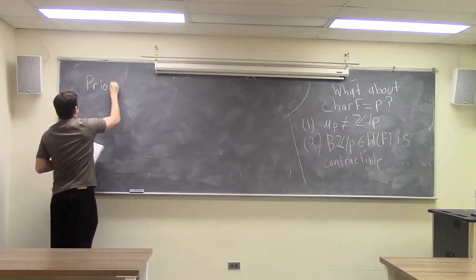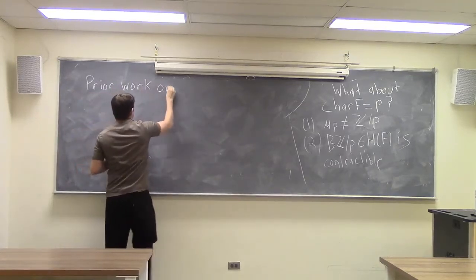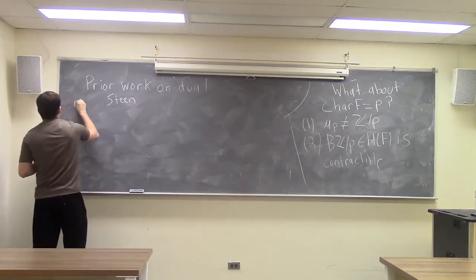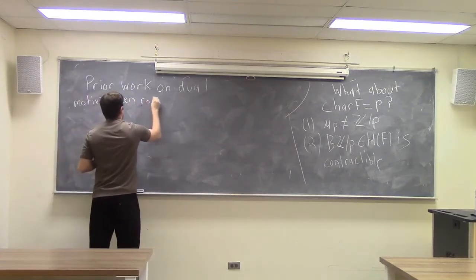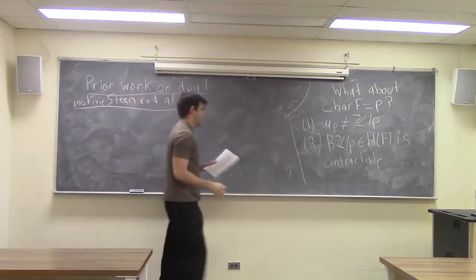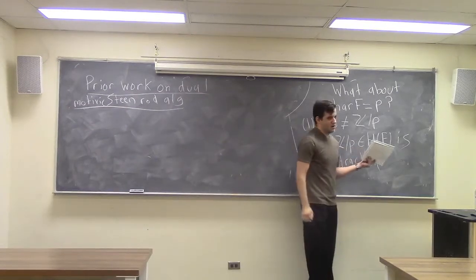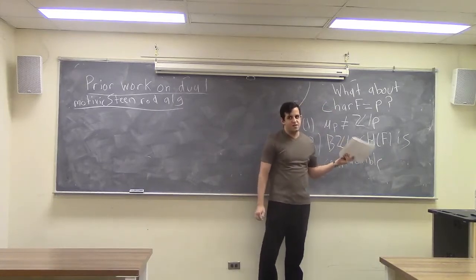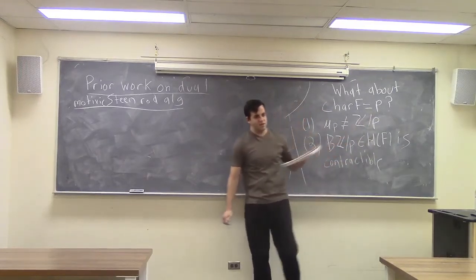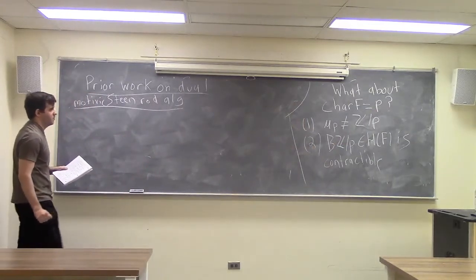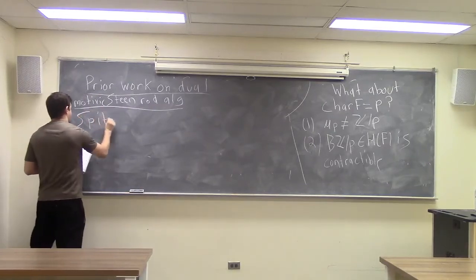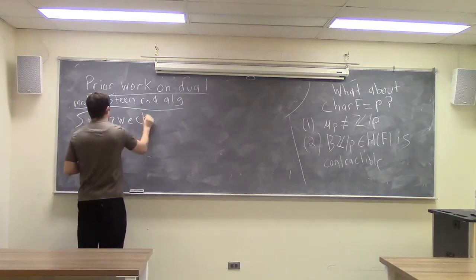Basically this construction from Brosnan, or more generally Voevodsky's construction, doesn't work when the characteristic of your field is the same as your coefficient field. Now when the characteristics aren't equal we had Steenrod operations, but there haven't been any Steenrod operations in the equal characteristic case. So I want to discuss how you can get operations in this case. The way we're going to do it is to take operations that exist in characteristic zero and lift them to characteristic p — the finite characteristic case. To do that, I'll recall some constructions of Spitzweck and Frankland.